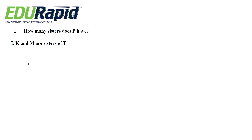Coming to the first question: how many sisters does P have? Statement 1: K and M are sisters of T. Second statement: T's father is husband of P's mother.